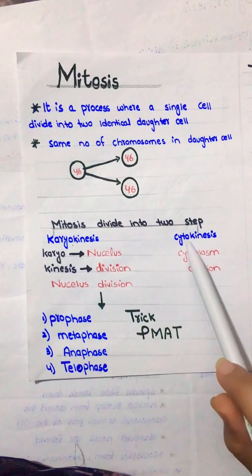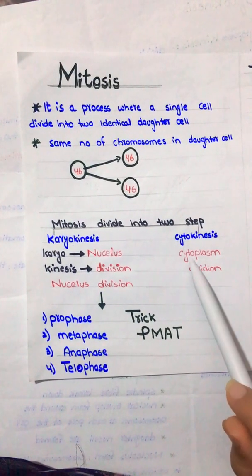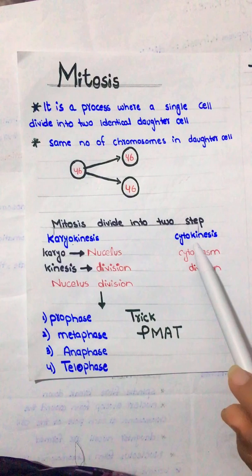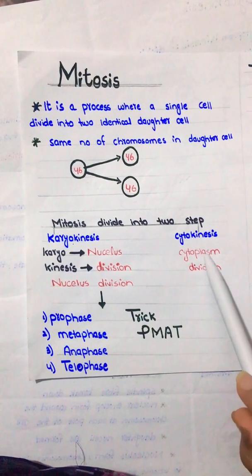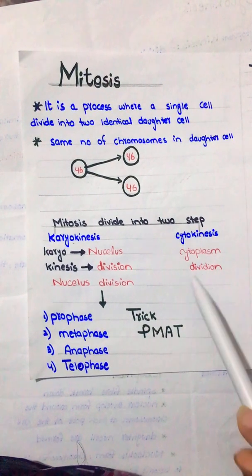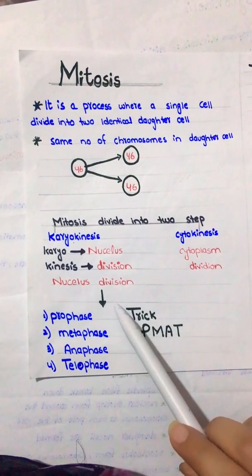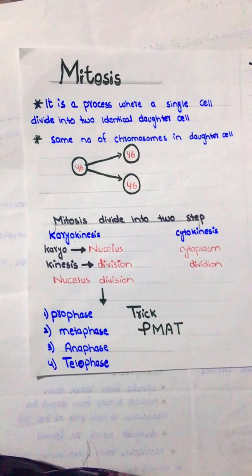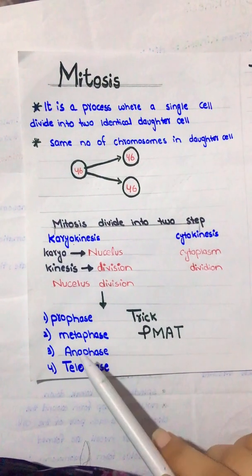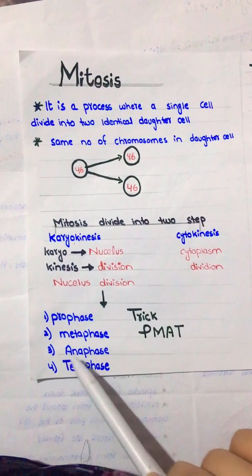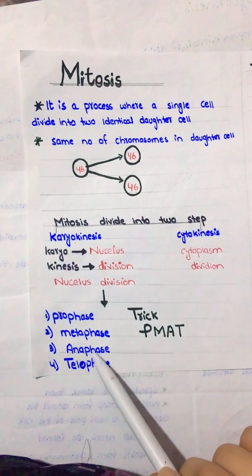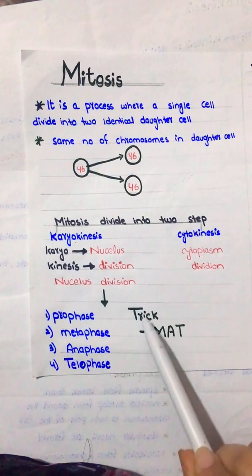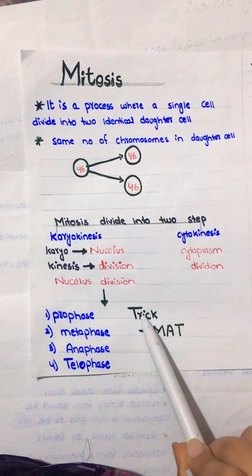Cytokinesis refers to cytoplasm division — cyto means cytoplasm and kinesis means division. Karyokinesis is further divided into four phases: the first is prophase, the second is metaphase, the third is anaphase, and the fourth is telophase.